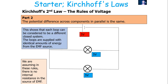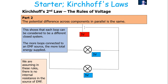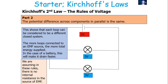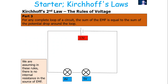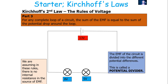The second part is that the potential difference across components in parallel is the same, because each loop is considered a different closed system, and the loops are supplied with identical amounts of energy per charge from the EMF source. The more loops connected to a source, the more energy supplied — in the case of a battery, it drains faster. Finally, for any complete loop, the sum of EMFs equals the sum of the potential drop around the loop.